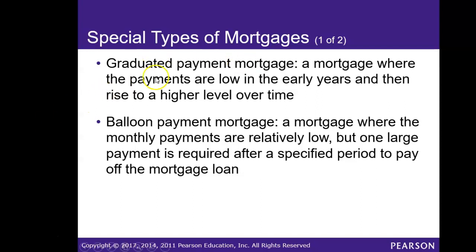With the graduated payment mortgage, that's a mortgage where the payments are low in the early years and then rise to a higher level over time. The graduated payment mortgage could be part of an adjustable rate mortgage, also known as an ARM.